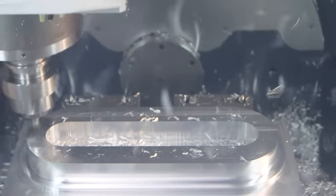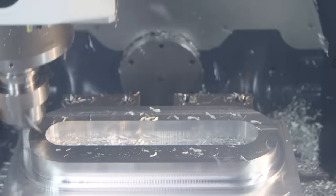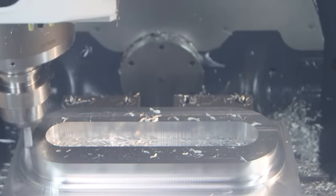Modern constant engagement toolpaths, as well as support for barrel mills and circle segment cutters, will run circles around the toolpaths that most shops were using 20 years ago.